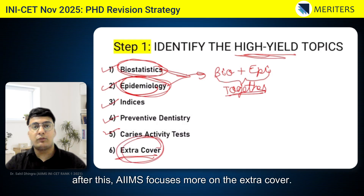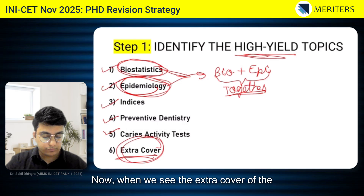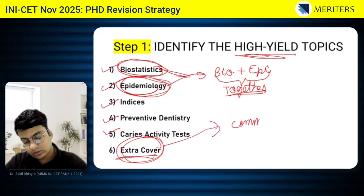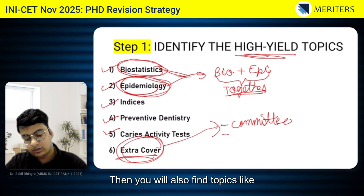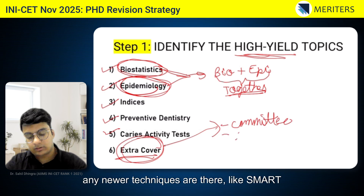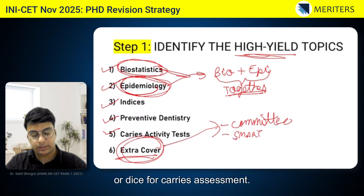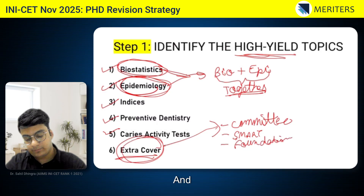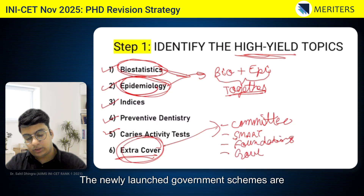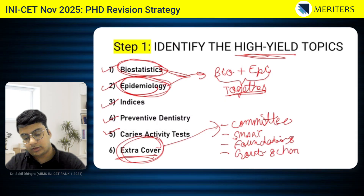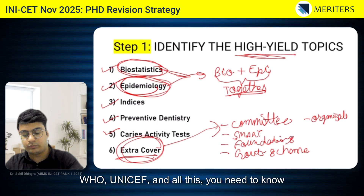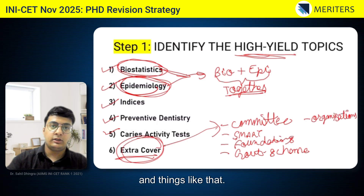AIIMS focuses more on the extra cover. When we see the extra cover of the Meritor's app, you will find topics like committees — like the Srivastar committee and the Tarsing committee. You will also find newer techniques like SMART for caries assessment, foundations like the Kellogg or Feder foundation, government schemes, organizations like WHO and UNICEF, and their headquarters.